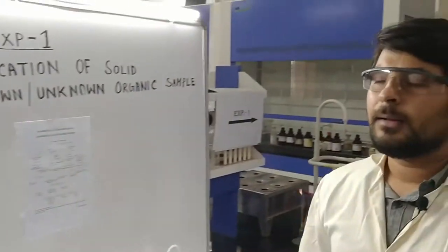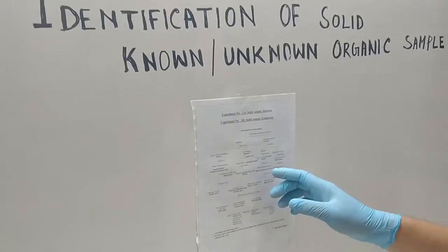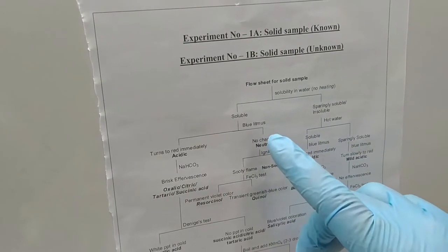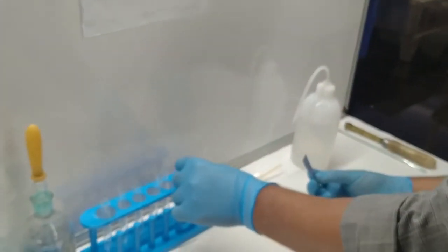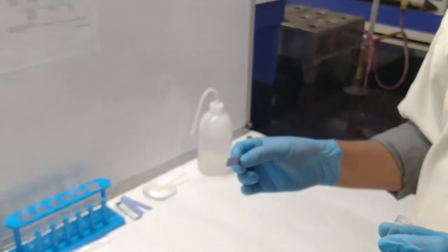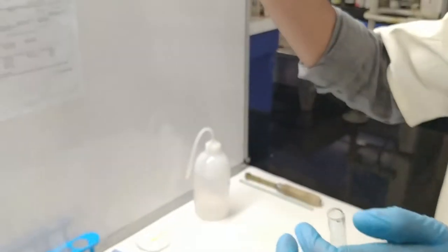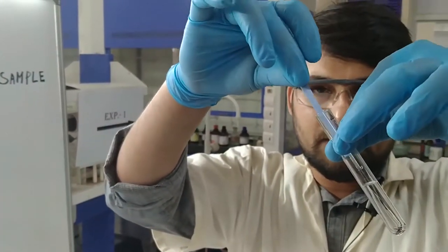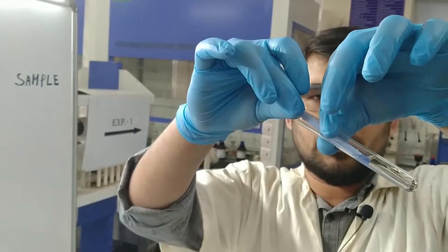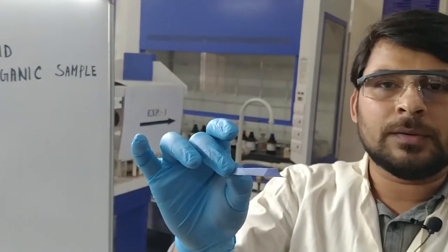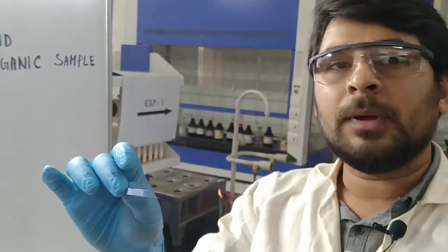The next test is the blue litmus test. I take a blue litmus paper and for this we also need an aqueous solution of glucose, but I already prepared this in the first test so no need to prepare again. I just fold the paper and place it in the solution. You can see no changes in the paper, so that means this solution is a neutral solution. Our blue litmus test is over.